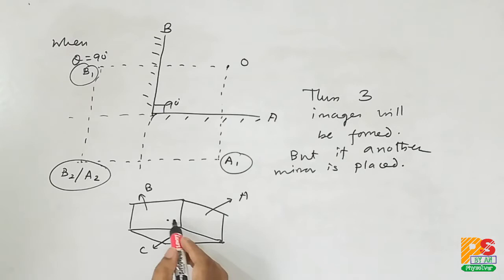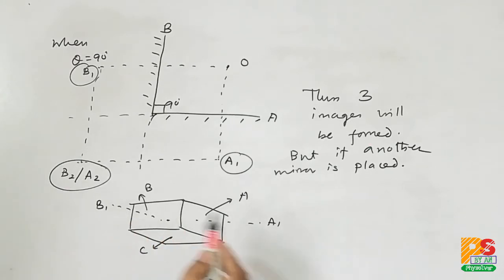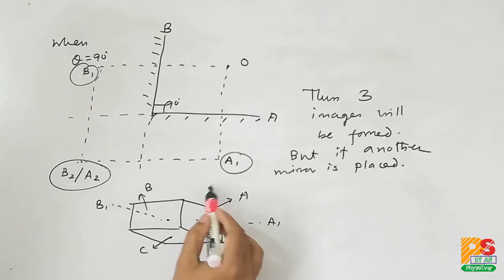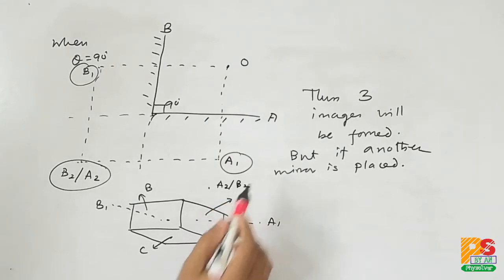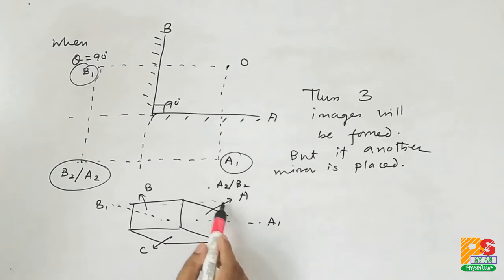The first image created behind A is A1, the first image behind B is B1, and this is A2 or B2. These three images are formed as shown in the previous diagram.